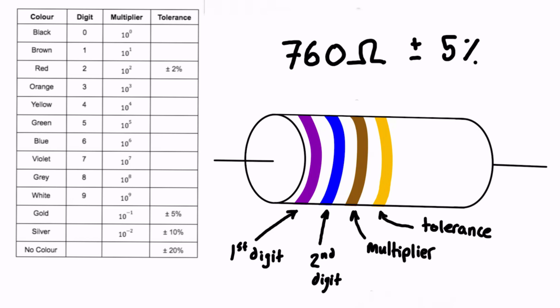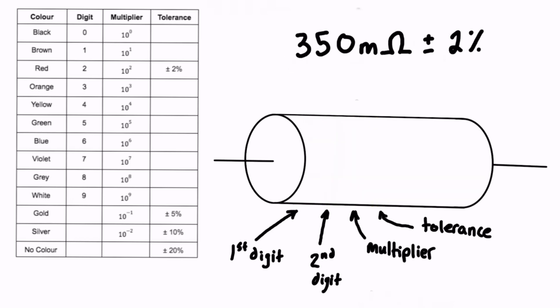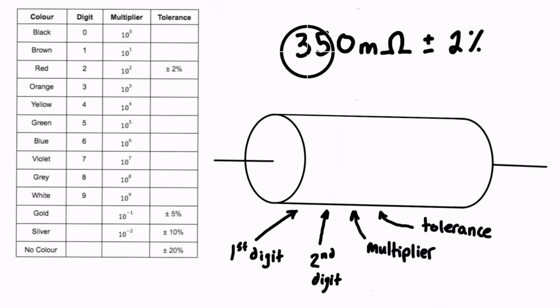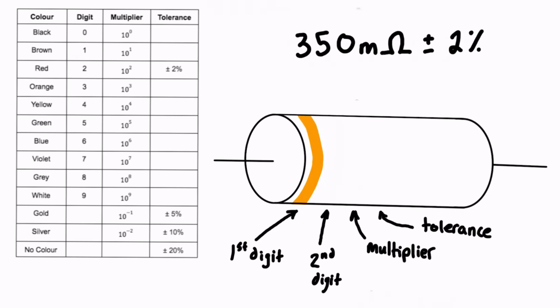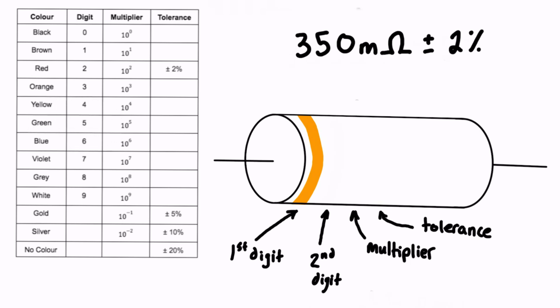Let's do another example. In this case we have 350 milliohms plus or minus 2%. The first digit is 3, so we pop over to the table and see what color corresponds to a digit of 3 — it's orange. Our second digit is 5, and the color that relates to 5 is green, so we draw on our second color band as green.